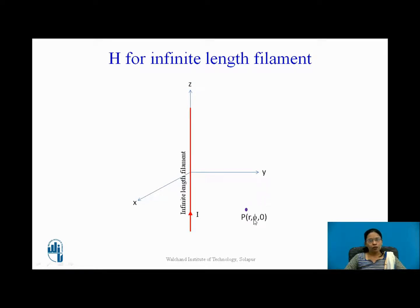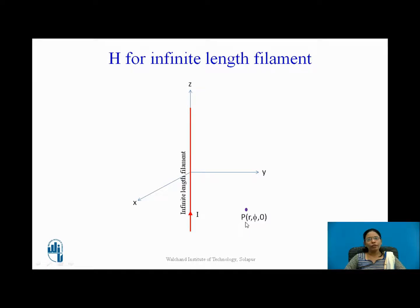Point P has coordinates (r, φ, 0) in cylindrical coordinates. The r represents the radius from the origin, φ is the plane through which point P passes, and z equals 0 because P lies in the x-y plane. So the coordinates of point P are (r, φ, 0).